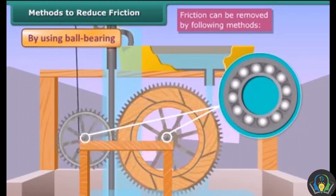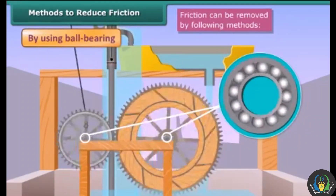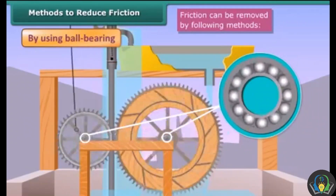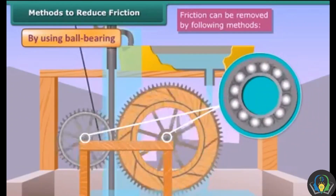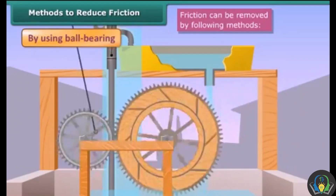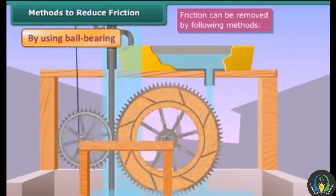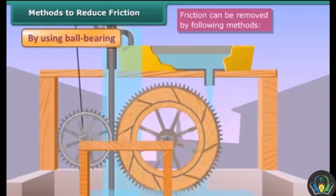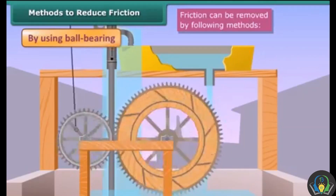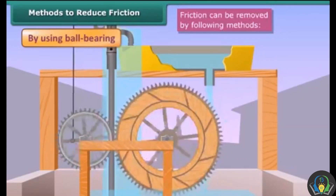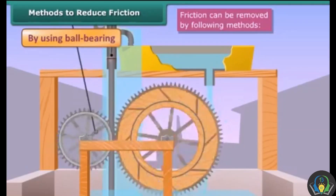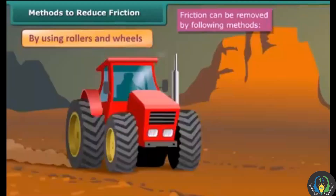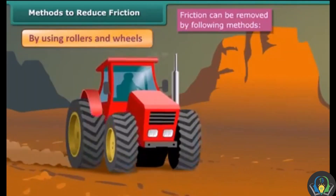By using ball bearings: ball bearings are a hollow circular device containing small metal balls, fitted around the moving part of a machine like an axle. Ball bearings reduce friction by converting sliding friction into rolling friction.